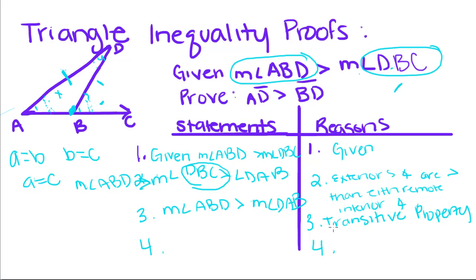Now for the last step: the bigger side is opposite the bigger angle. Since angle ABD is bigger than angle DAB, the side opposite B — which is AD — is greater than the side opposite A — which is DB. Therefore, AD is greater than BD.